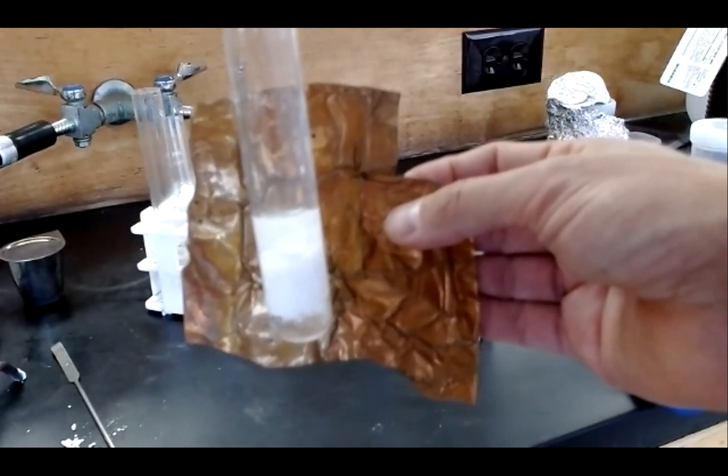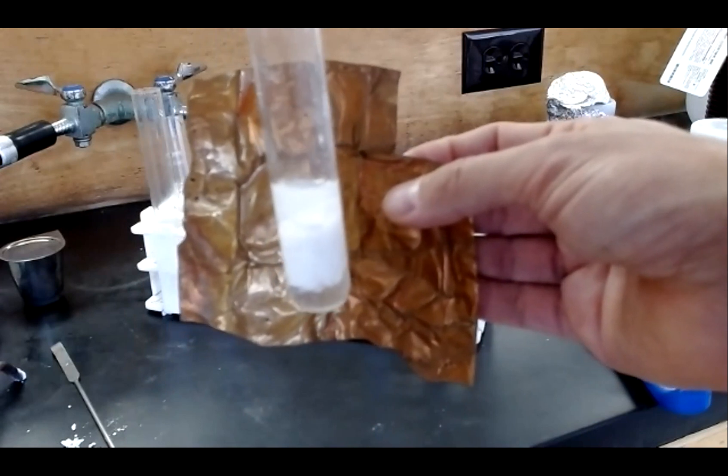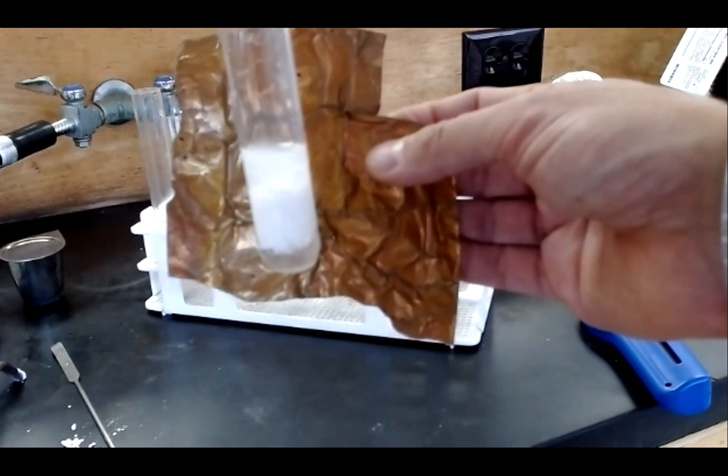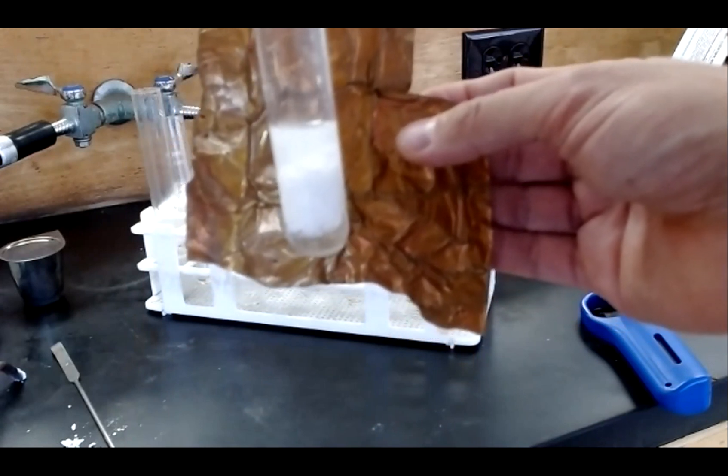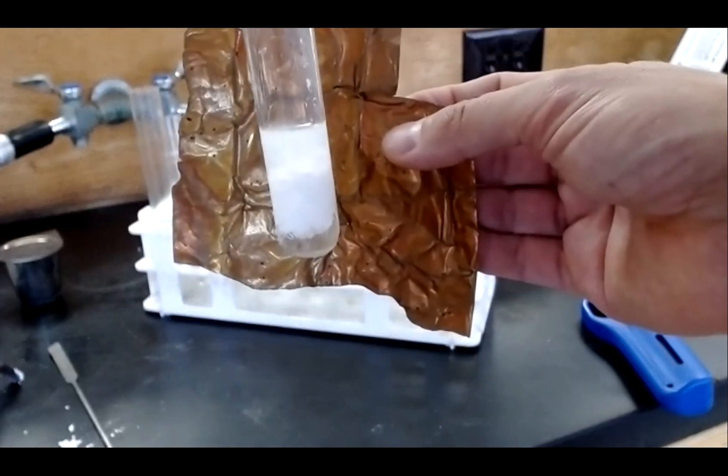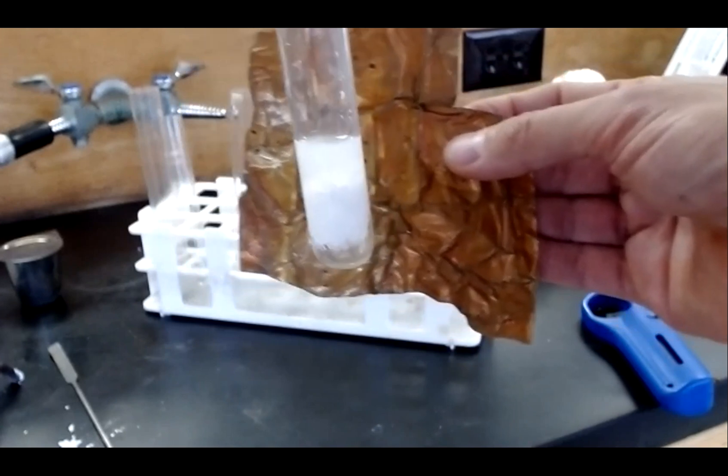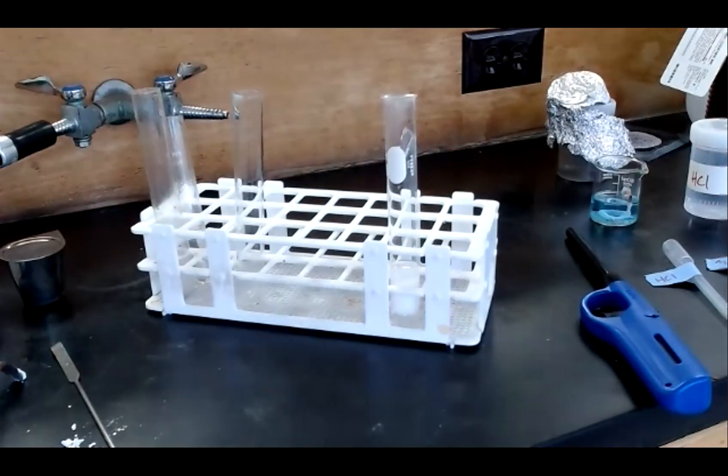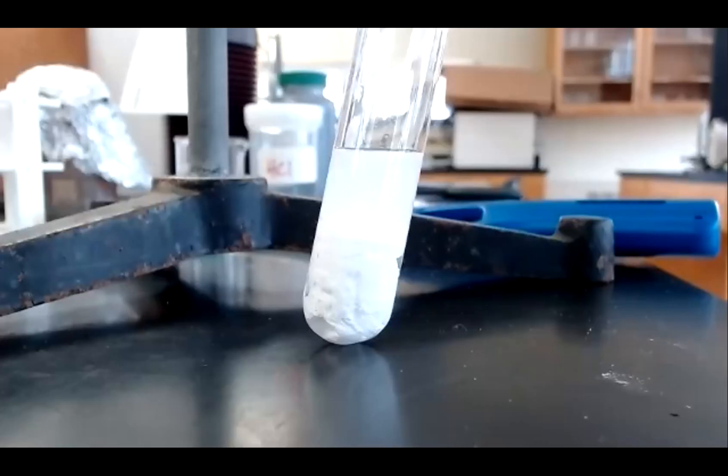This is a really good example of a double replacement reaction. There's very clear evidence of a chemical reaction as the precipitate forms, which is one of our pieces of evidence. And we'll look at the equation which will give us a clue as to what that precipitate might be. With the up close shot, you can see the very clear solid precipitate that's formed inside of that test tube.